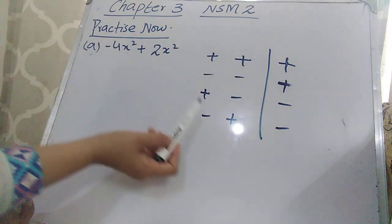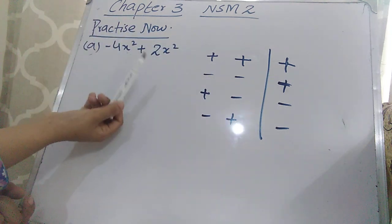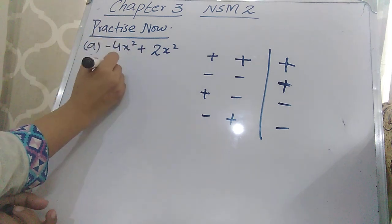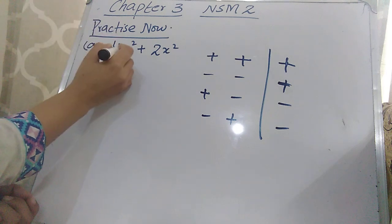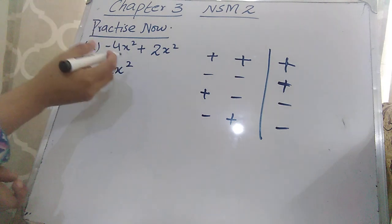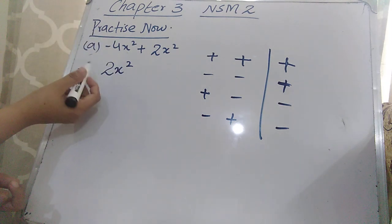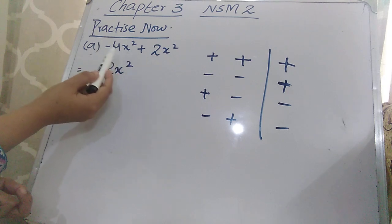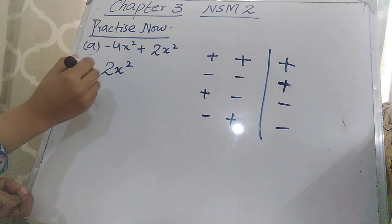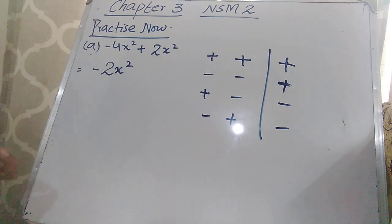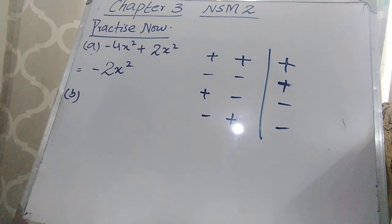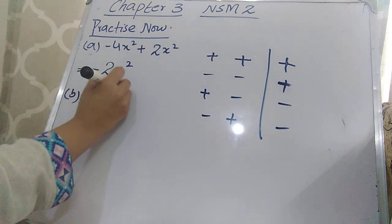For part (a): looking at the signs — plus and minus gives minus — so the operation is subtraction. 4 minus 2 is 2. Don't forget to write the variable x² with the answer. Then write the sign of the bigger number: the bigger number is 4 and it has a minus sign, so the answer is −2x².